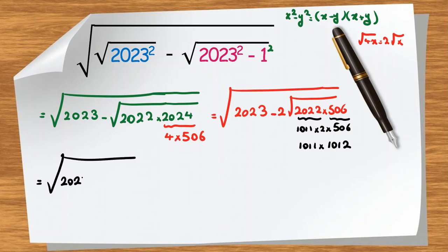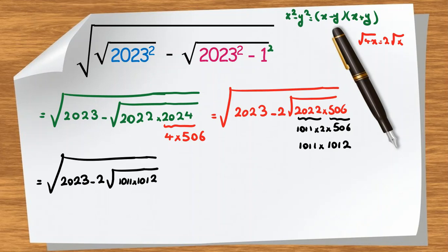So our expression is now the square root of 2023 minus 2 times the square root of 1011 times 1012.